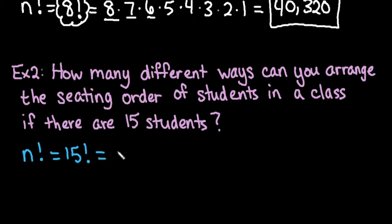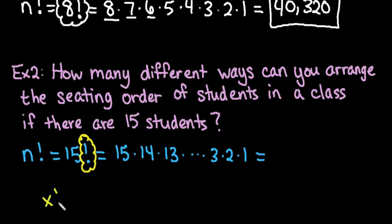I would have to do 15 times 14 times 13 all the way down times 3 times 2 times 1. I just don't want to write it all out, but that's what you would have to do. Again, if you can find this in your calculator—I guarantee you on your cell phone calculator, just turn it sideways to the scientific notation part and you'll see x factorial. I will show on the TI-84, TI-Inspire in another video.